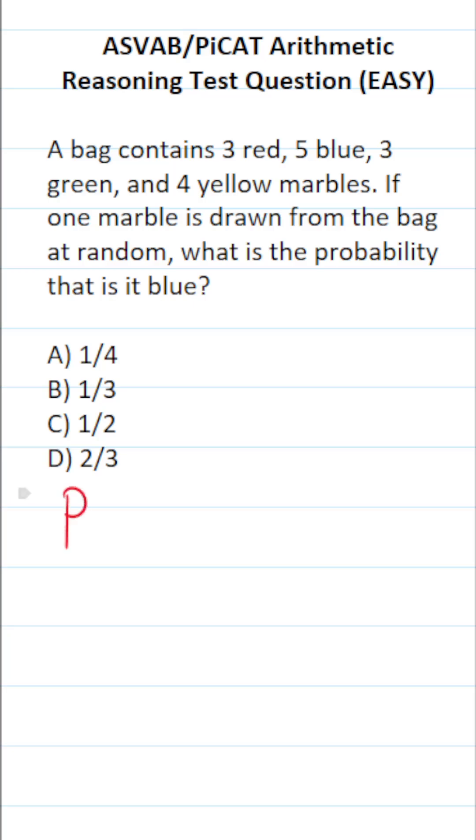So the probability, P, of selecting a blue marble is going to be equal to the number of blue marbles in the bag divided by the total number of marbles in the bag.